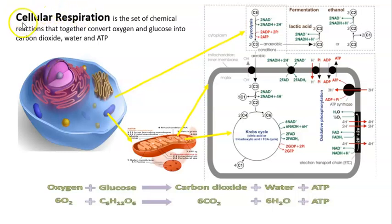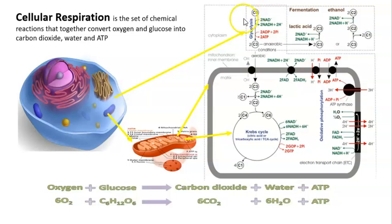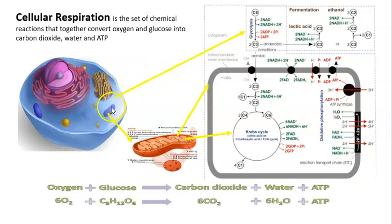Cellular respiration is a set of chemical reactions. The first chemical reaction happens in the cytoplasm, and the process is called glycolysis. This is an anaerobic process. The other two steps in cellular respiration are going to happen in the mitochondria.